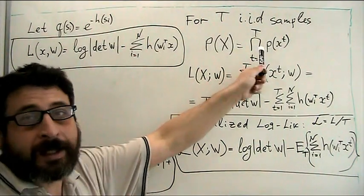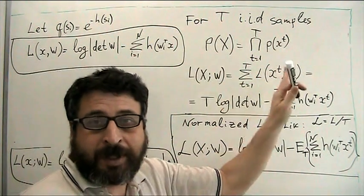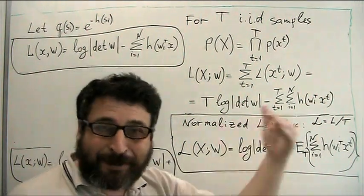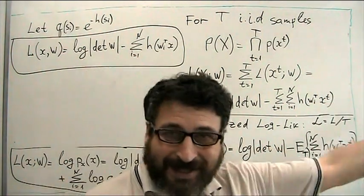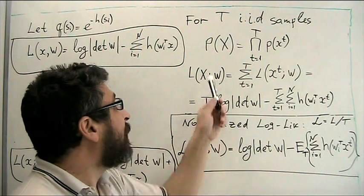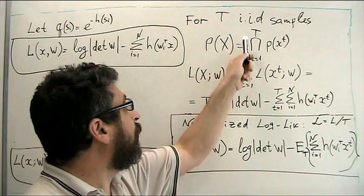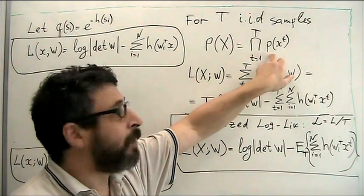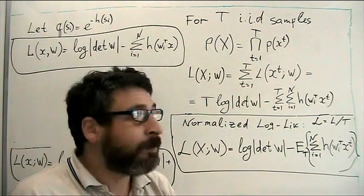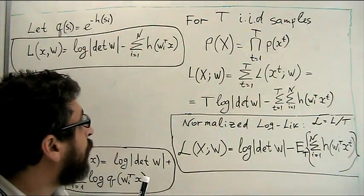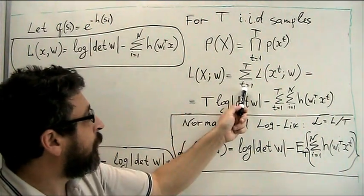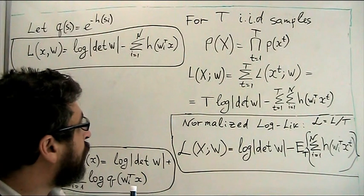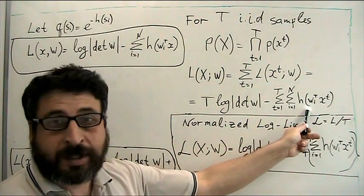And then, again, like already we told, if we observe many time samples of our mixtures, each sample is vector. And suppose that they are like white noise, statistically independent over time, then probability density of all matrix x, which columns are those term samples, will be a product of probability density. So, every column. So, after taking log, we just need to sum over time this likelihood. And this will be the expression.